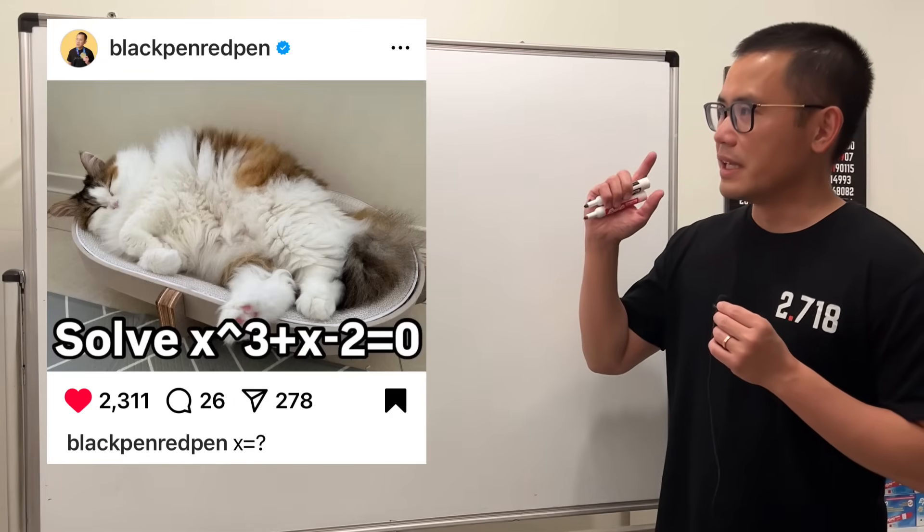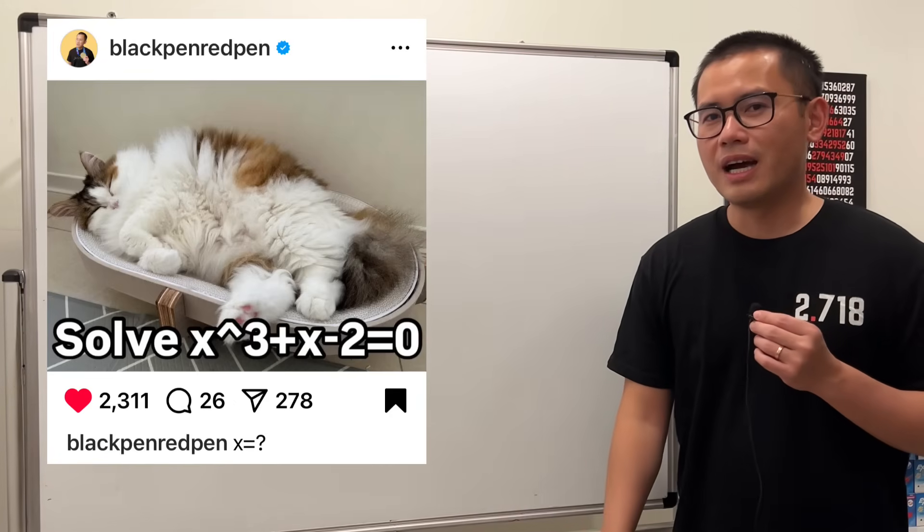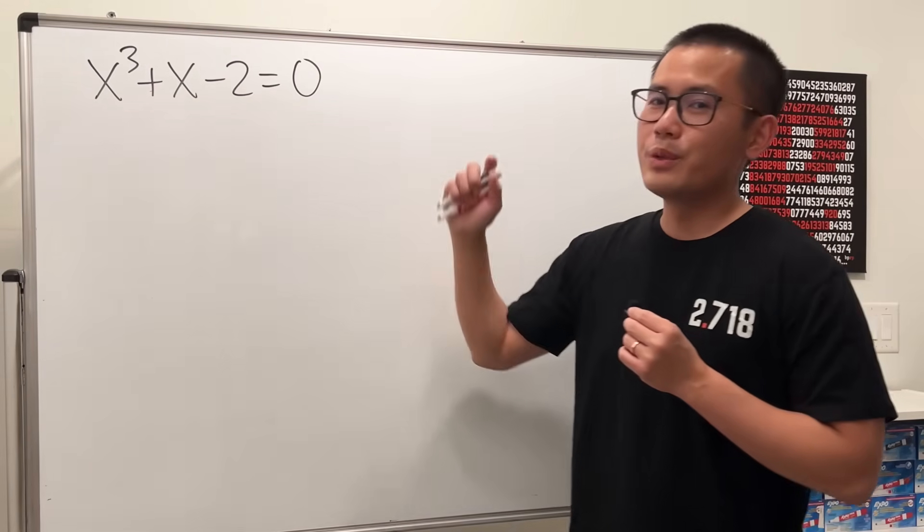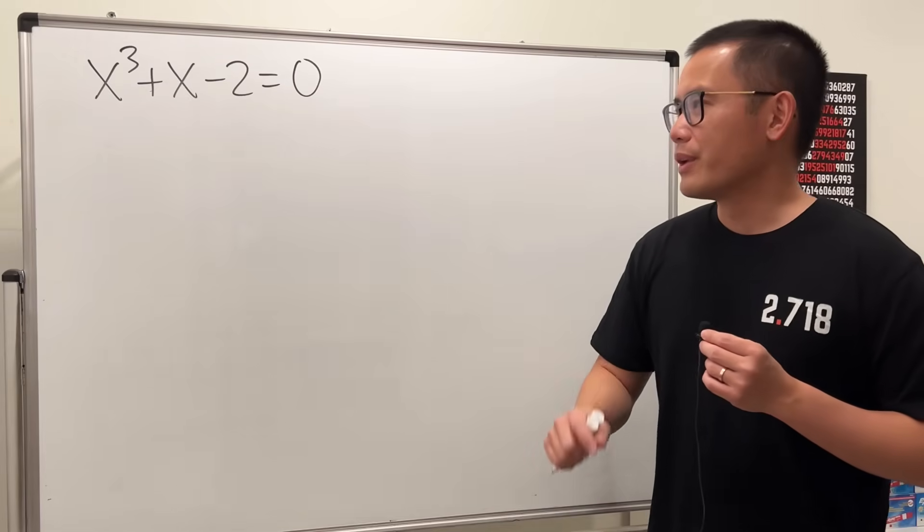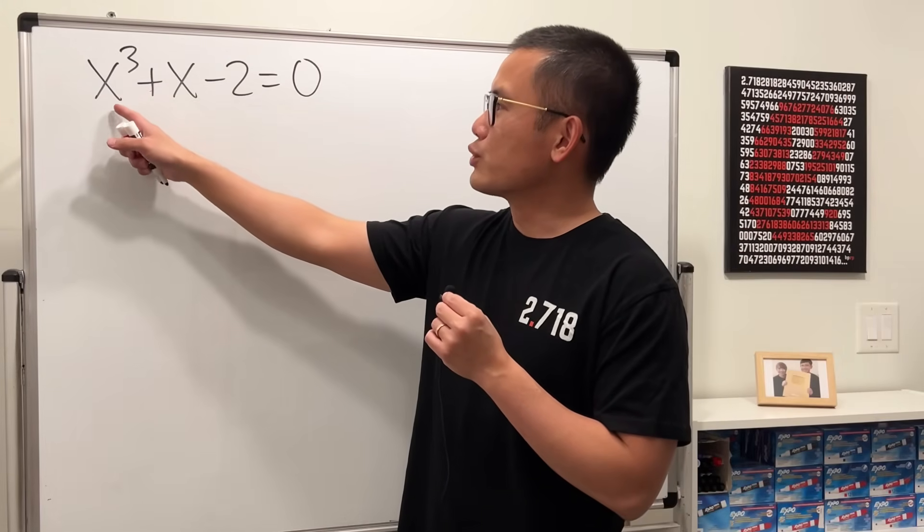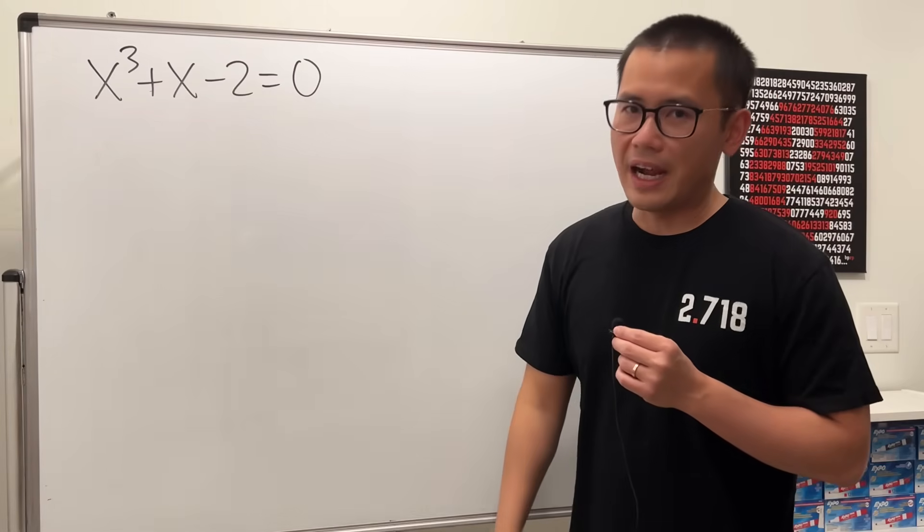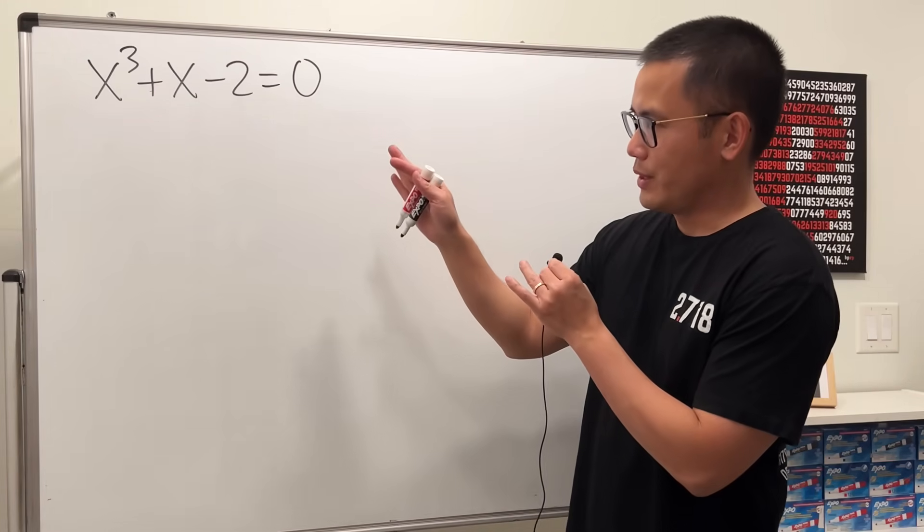So today let's take a look at how we can solve this equation that I posted on my Instagram. Here we have x cubed plus x minus 2 equals zero. Notice this is a trinomial but it's a cubic, right? It's not easy to factor.